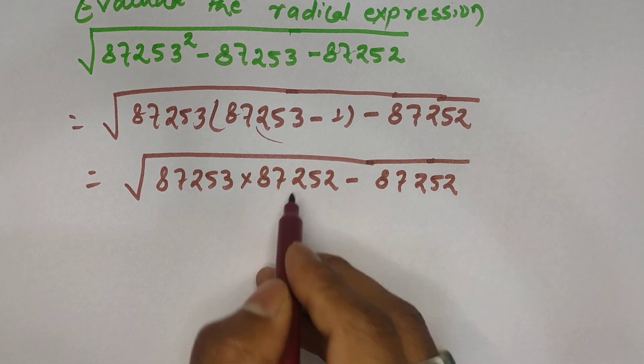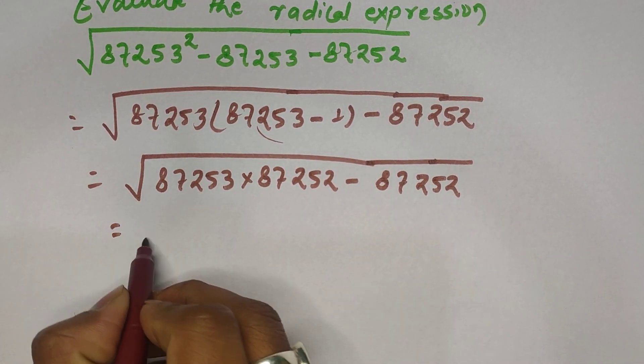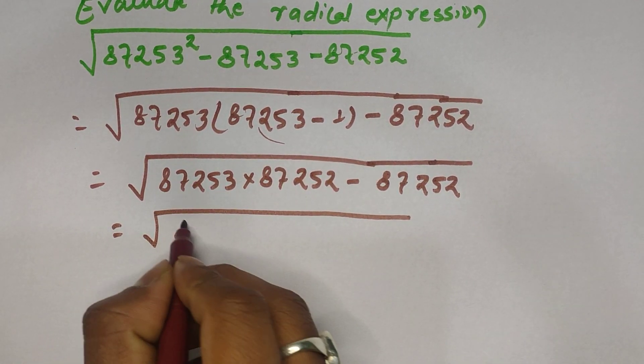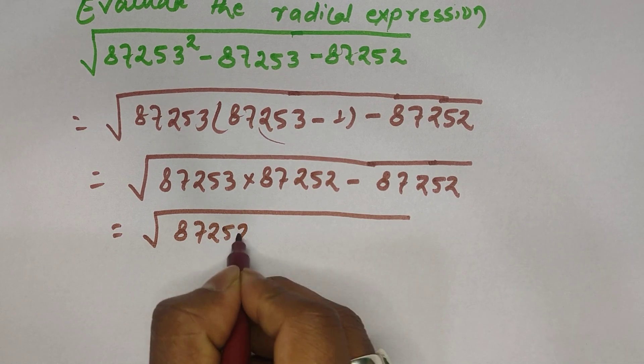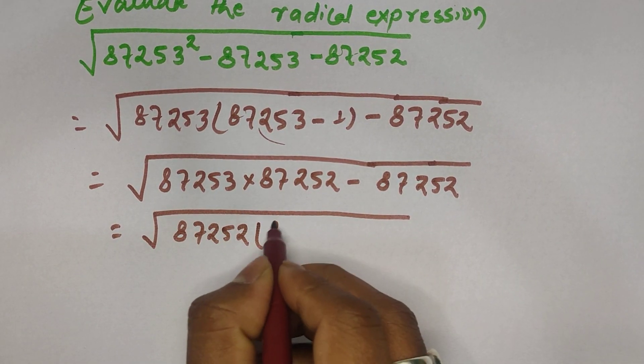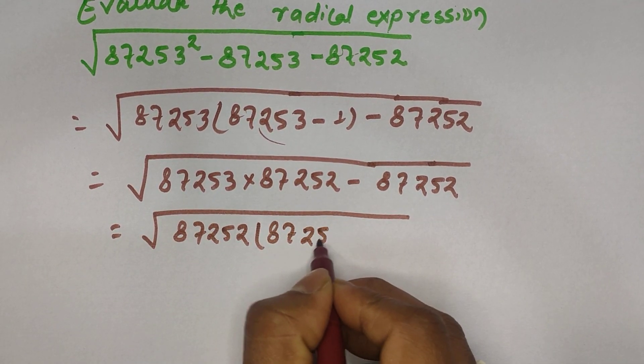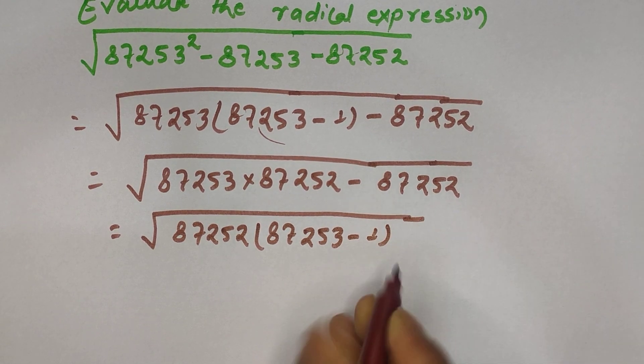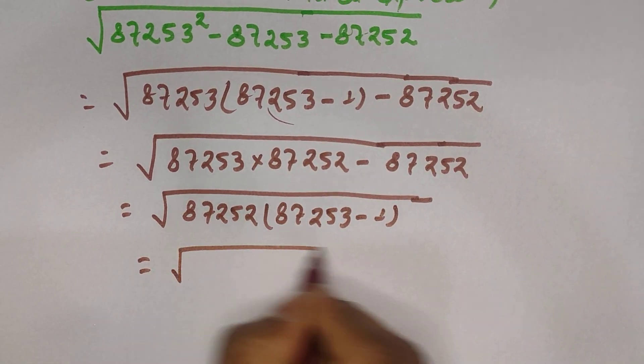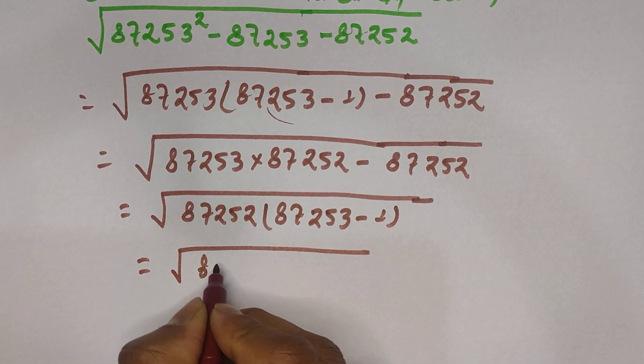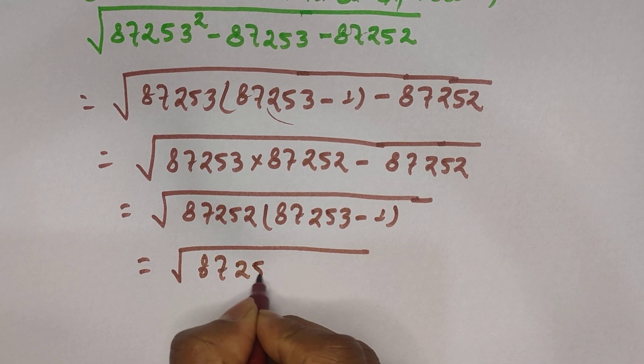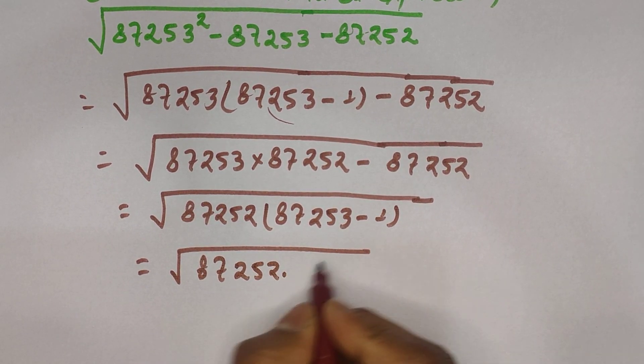87252 is the common. So then again take the common. 87252 is our common, and the remaining one is 87253 minus 1. And again, when you subtract this one, then you will get here 87252 times, after subtracting this